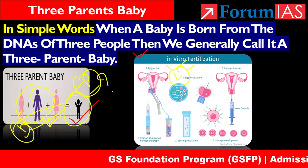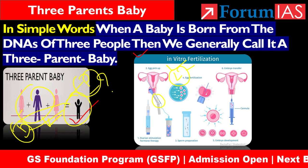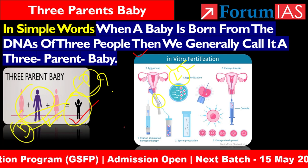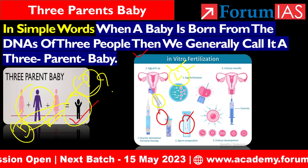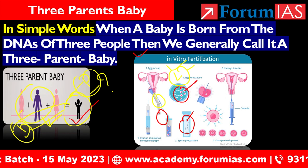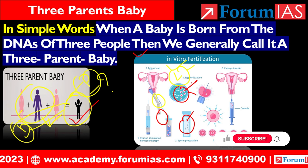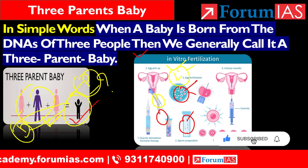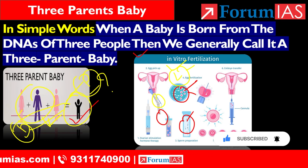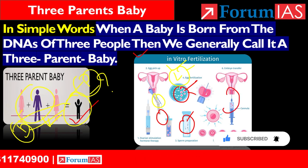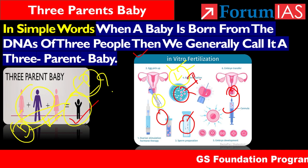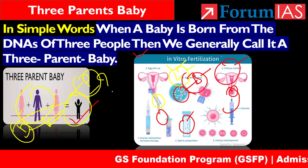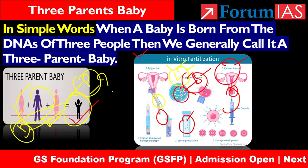In the IVF technique, the mother's egg is collected in the lab and the father's sperm is collected in the lab. Both are combined in the lab where fertilization takes place and a zygote is created. After that, the zygote is placed in the mother's uterus, and finally the baby's development takes place. This is the basic idea of IVF technique.